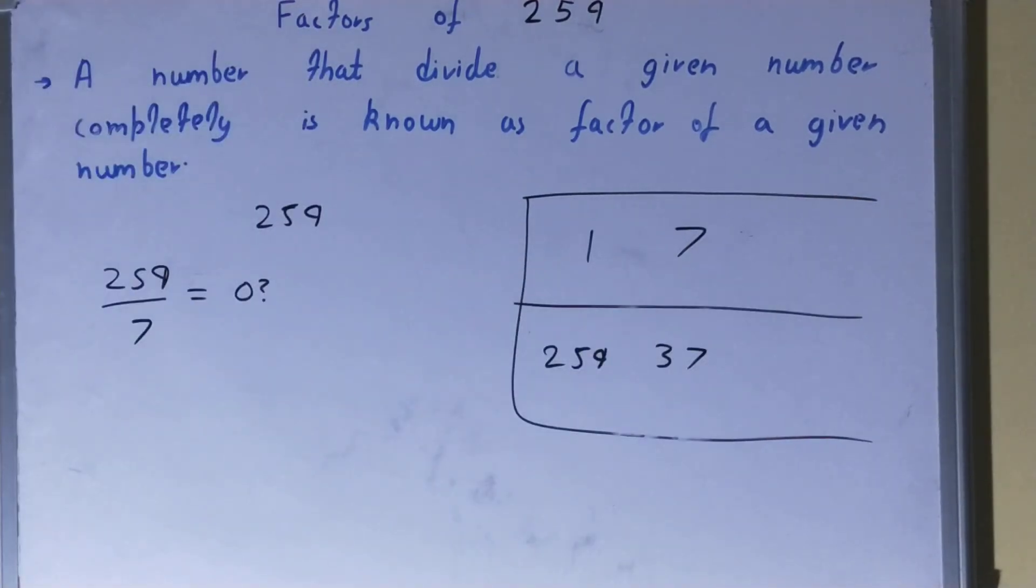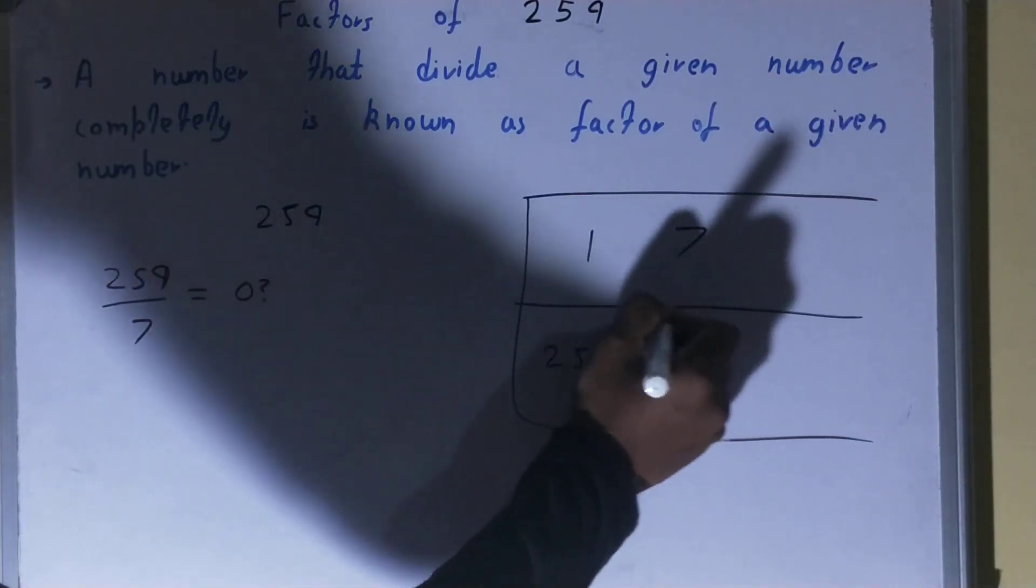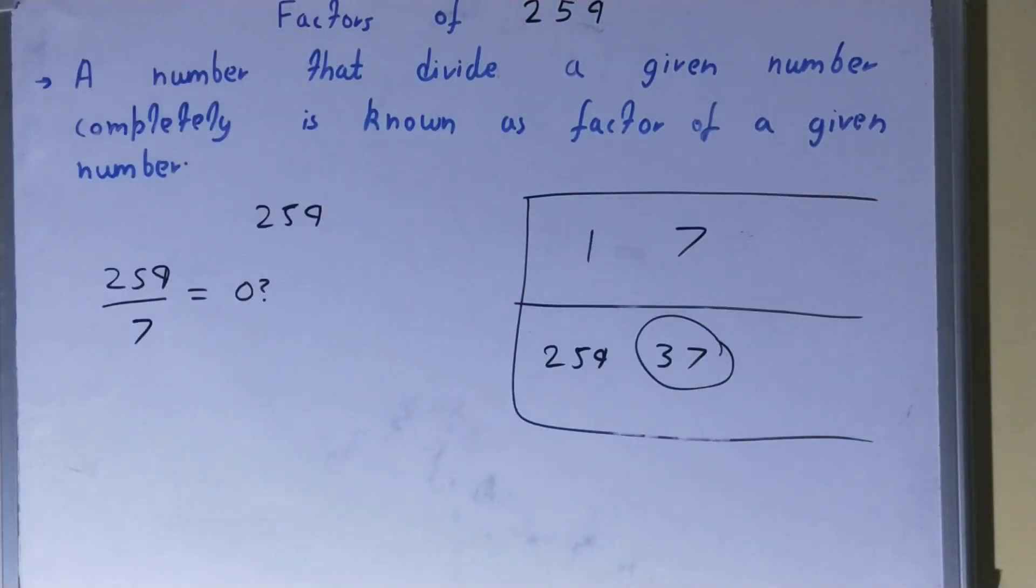Now one thing you need to see very carefully over here: in the second row, in the last row, you have got a prime number in the form of 37. So whenever you spot a prime number in the second row or in the last row, then your work is done. You don't need to check any further. And the set of factors for the number 259 will be 1, 7, 37, and 259.